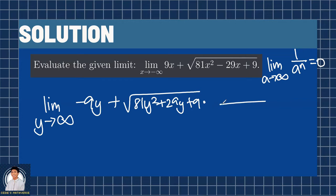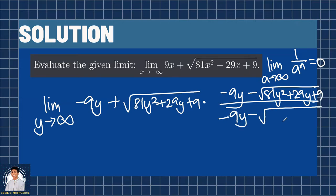So the conjugate of this expression is negative 9y. Since this is plus, it becomes minus square root of 81y squared plus 29y plus 9. And then, the same thing should be multiplied to the denominator to preserve the value of this expression. Remember, if we multiply on the numerator, we should multiply on the denominator so that we're just multiplying 1, which doesn't change the value of the expression.